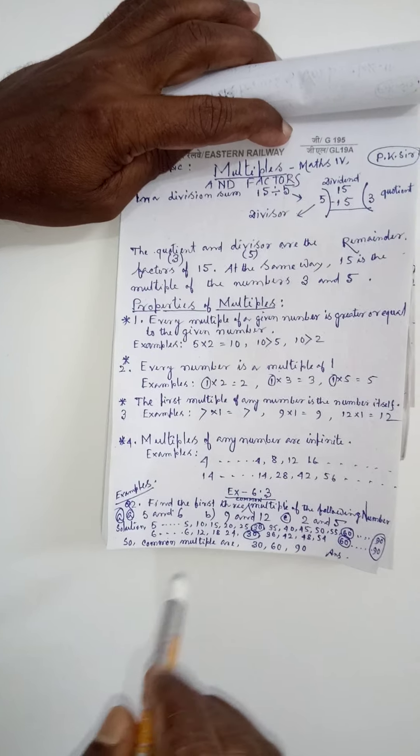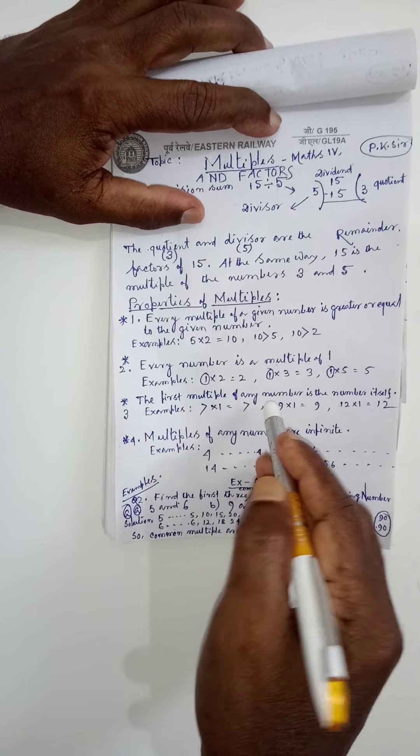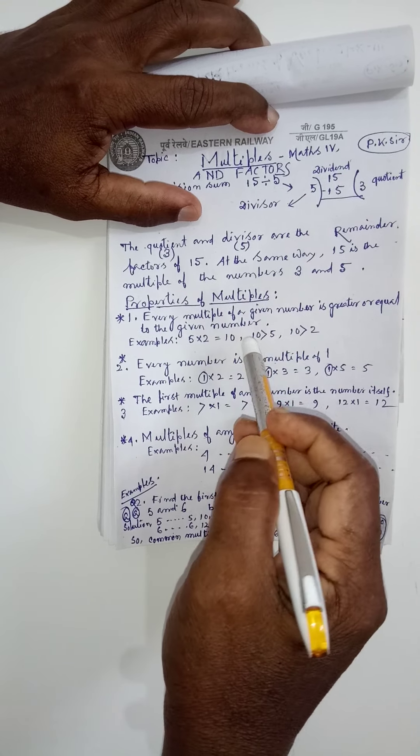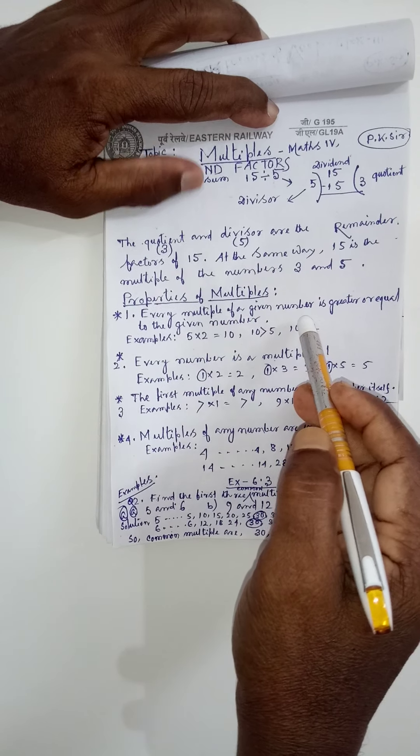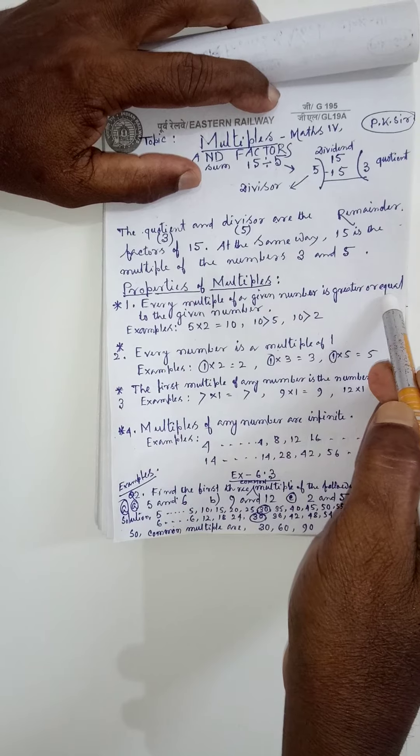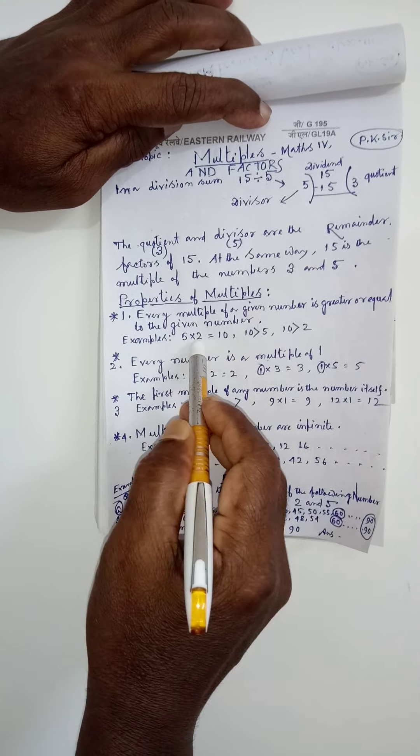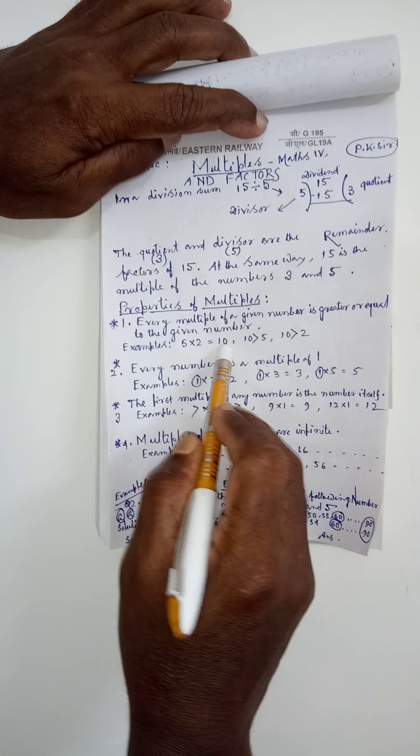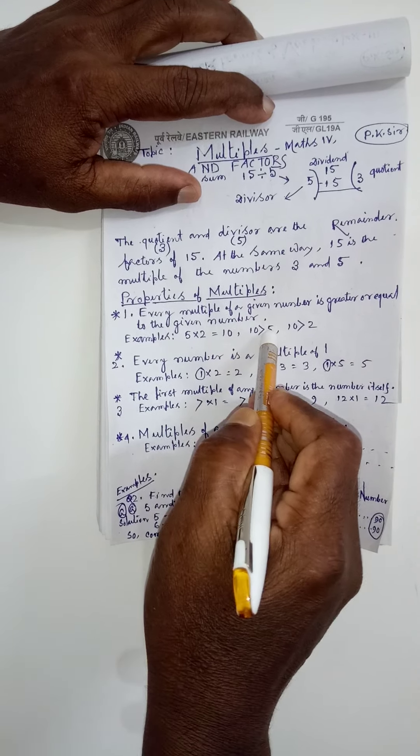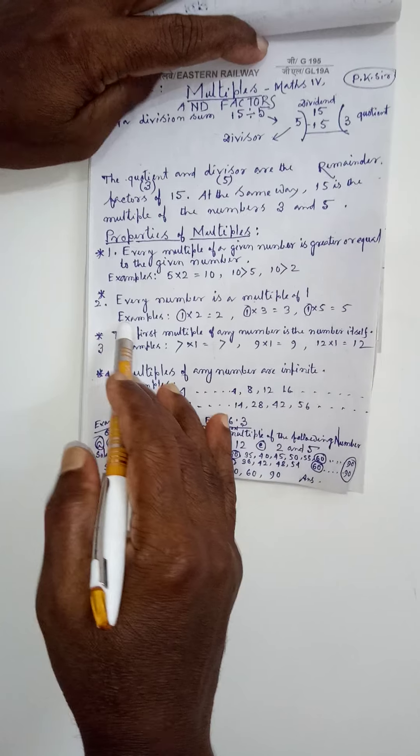Some important points to be noted, facts to remember. Let us see properties of multiples. Every multiple of a given number is greater or equal. Let us see the example 5 to your 10. Here, 10 is the multiple of 5 and 2. 10 is greater than 5 as well as 10 is greater than 2.